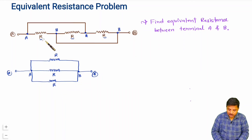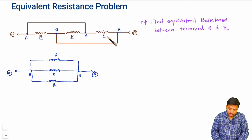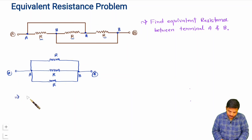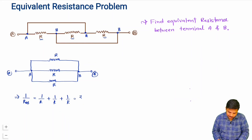Initially when you see the original circuit it does not appear like three resistors R are in parallel, but after redrawing, this network is technically a parallel combination of R, R, and R. So the equivalent resistance between A and B as per parallel combination gives 1/R_AB = 1/R + 1/R + 1/R = 3/R. Therefore R_AB = R/3.